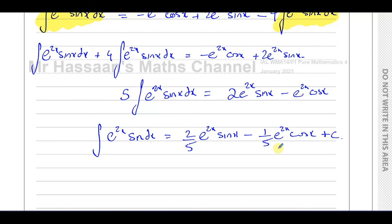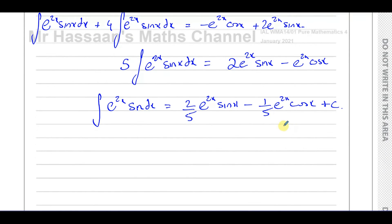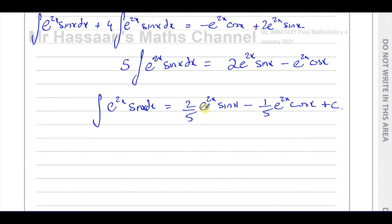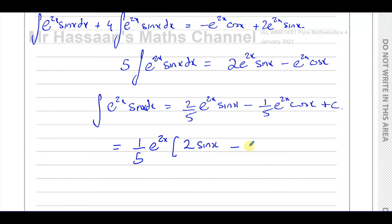Dividing by 5, the integral of e to the power of 2x sine x dx equals two-fifths e to the power of 2x sine x minus one-fifth e to the power of 2x cosine x plus c. Don't forget the plus c. We can also factorize: there's a common factor of one-fifth and e to the power of 2x, giving one-fifth e to the power of 2x times (2 sine x minus cosine x) plus c. Both forms are correct; the factorized form will make the next step easier.